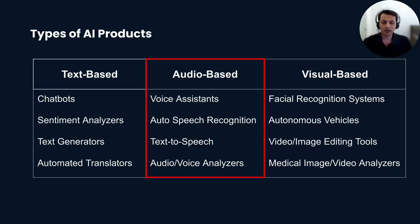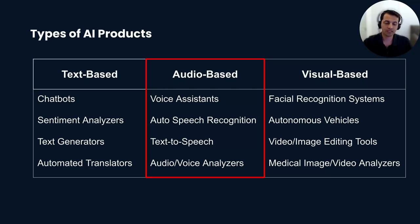Audio-based AI products are designed to understand and interact with audio data, especially human speech. They utilize technologies like automatic speech recognition (ASR), text-to-speech (TTS). Some audio-based products include voice assistants like Alexa, Google Assistant, or Siri from Apple.